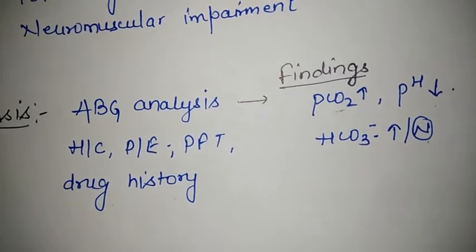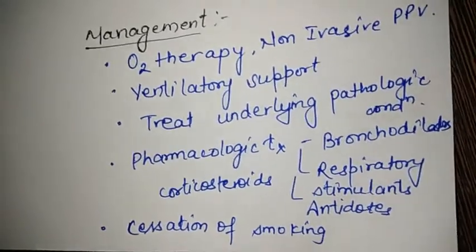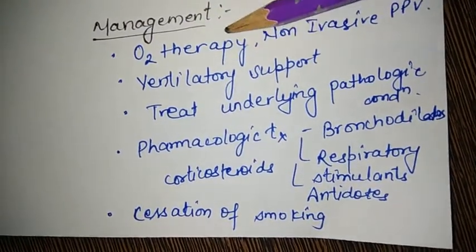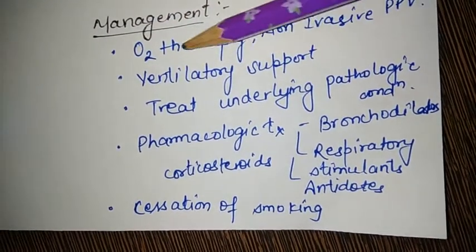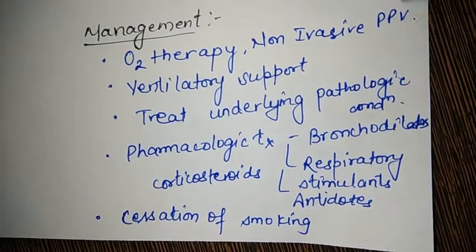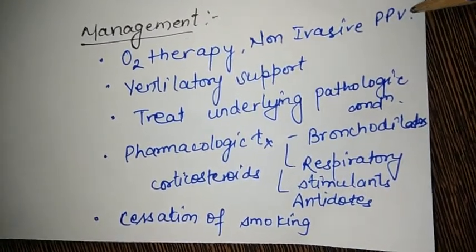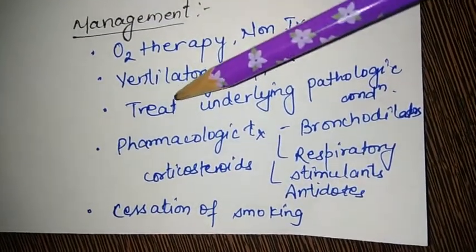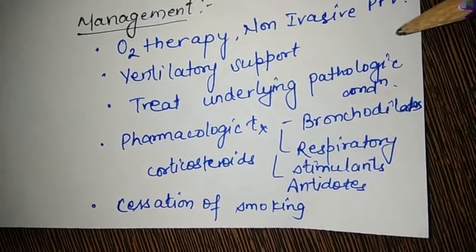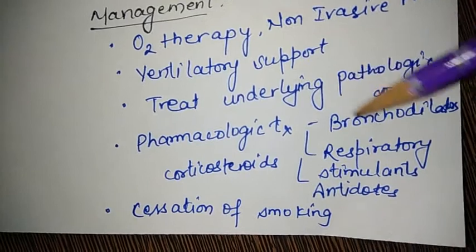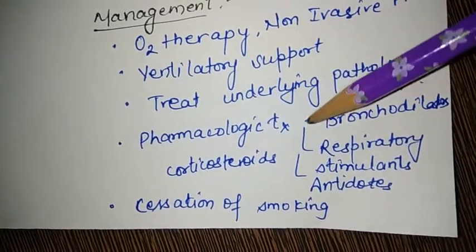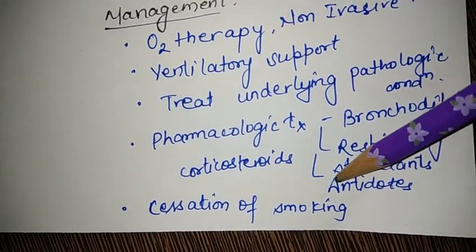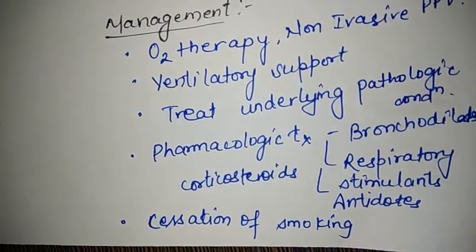Management of respiratory acidosis includes oxygen therapy, since the person has shortness of breath — provide oxygen or non-invasive positive pressure ventilation such as BiPAP and CPAP. Ventilatory support with mechanical ventilation may also be required. The underlying pathological condition — the identified cause — must be treated. Pharmacological treatment includes bronchodilators, respiratory stimulants, and antidotes for drug overdose.